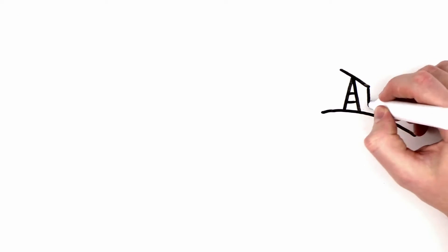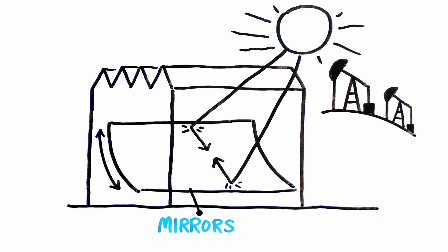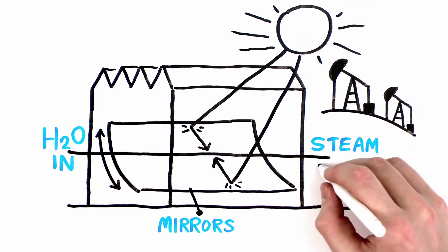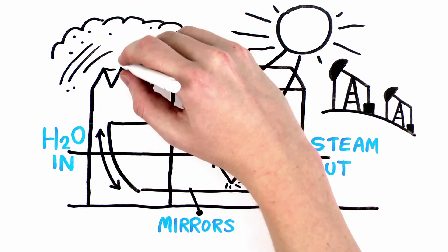GlassPoint solar steam generators were designed specifically for the oil and gas industry. Mirrors inside a glasshouse track the sun, focusing its heat onto a pipe containing water, turning it into steam. The glasshouse protects the mirrors from the sand and dust common in oil-producing regions.